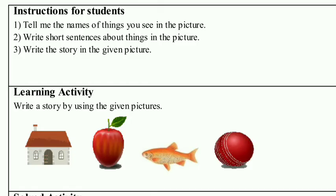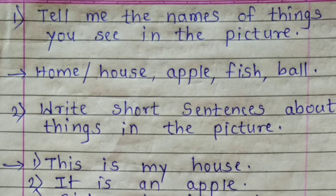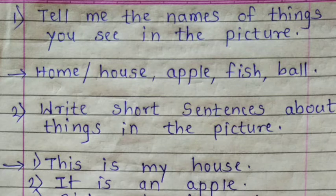There are three questions with answers provided. The first question is: tell me the names of things you see in the picture. Looking at the picture, we can identify things such as: home or house, apple, fish, and ball — these are the things given there.